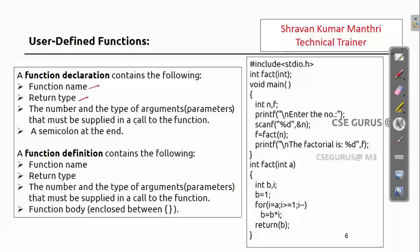Revisiting function declaration: it consists of the function name, return type, and the number and types of arguments, ending with a semicolon. In the function definition, you again have the name, return type, and the number and types of arguments, but enclosed in braces containing the logic — also called the body of the function.